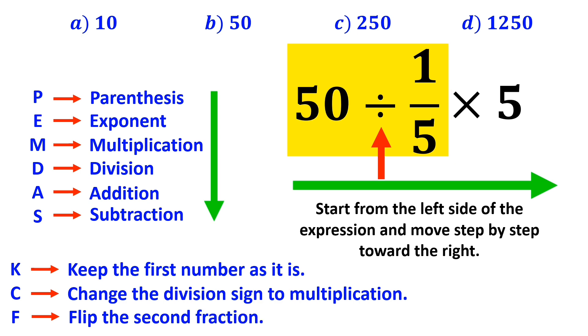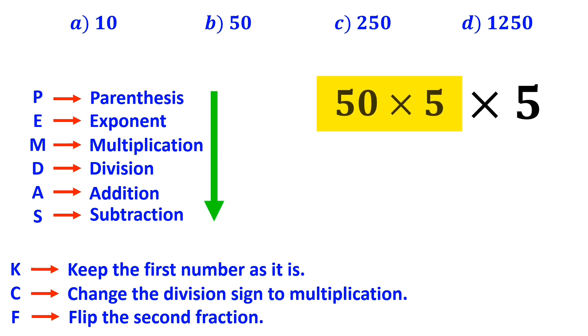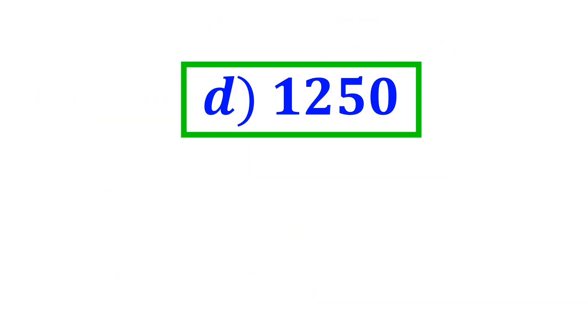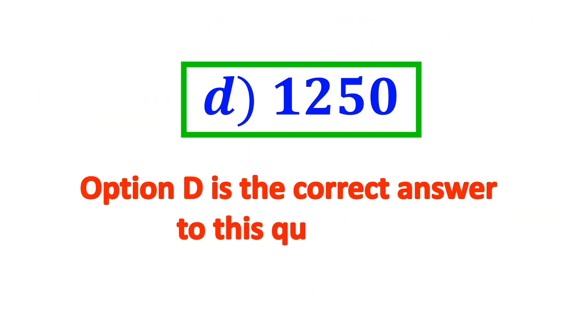So we remove the highlighted part and replace it with 50 times 5. And this expression simplifies to 250 times 5, which finally gives us the answer 1250. Therefore, option D is the correct answer to this question.